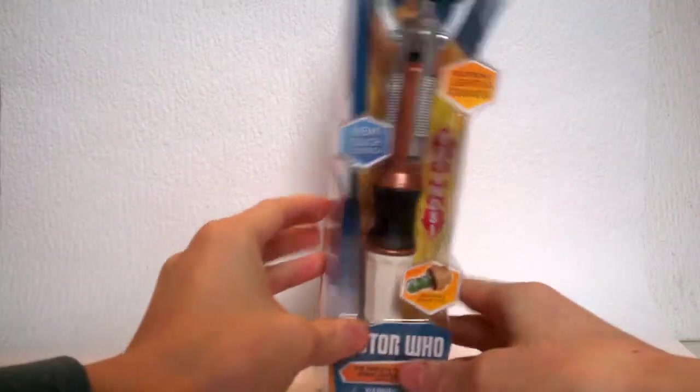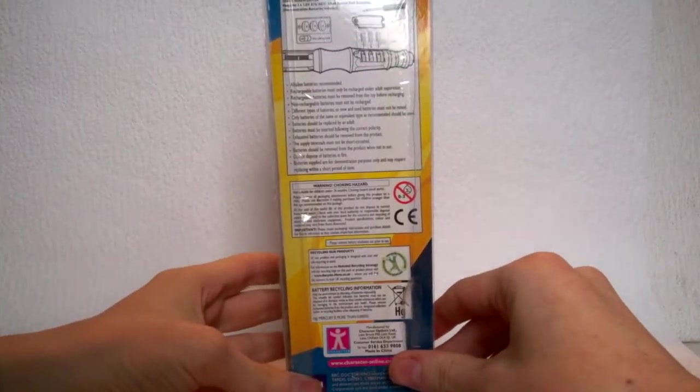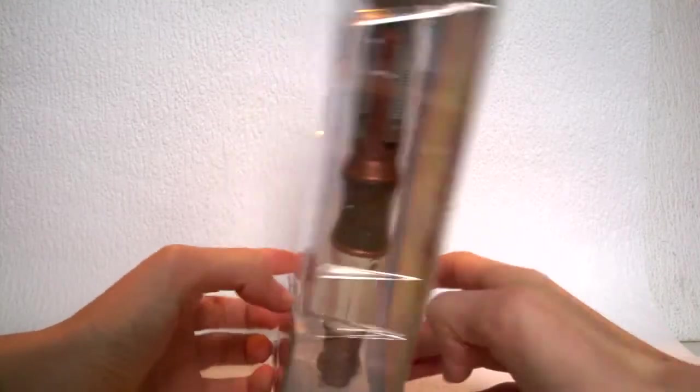At the top we have the TARDIS logo 5+. Taking a look at the back, we have legal information and how to put batteries into a Sonic Screwdriver. Now let's take a look at the product itself.